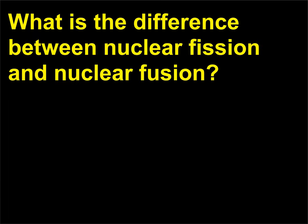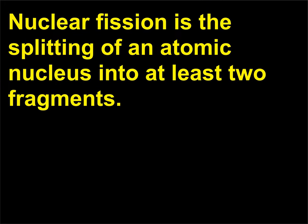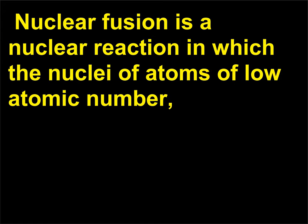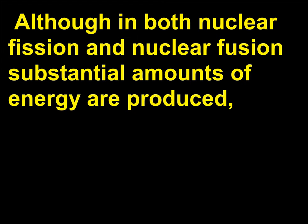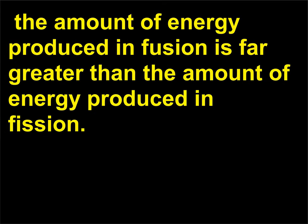What is the difference between nuclear fission and nuclear fusion? Nuclear fission is the splitting of an atomic nucleus into at least two fragments. Nuclear fusion is a nuclear reaction in which the nuclei of atoms of low atomic number — such as hydrogen and helium — fuse to form a heavier nucleus. Although in both nuclear fission and nuclear fusion substantial amounts of energy are produced, the amount of energy produced in fusion is far greater than the amount produced in fission.